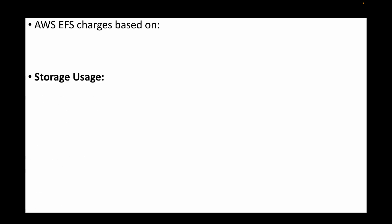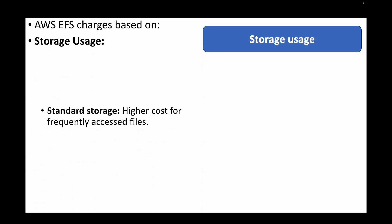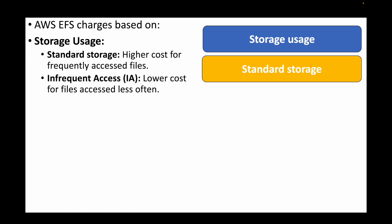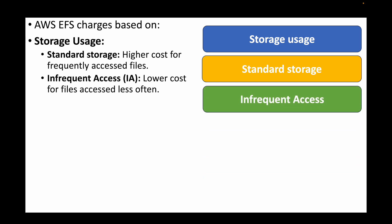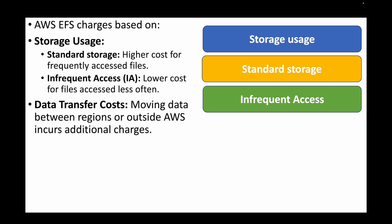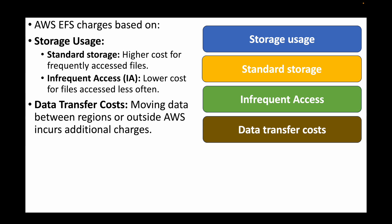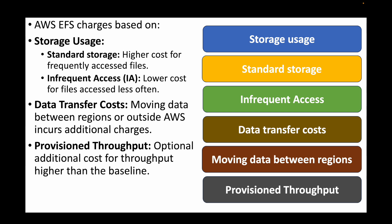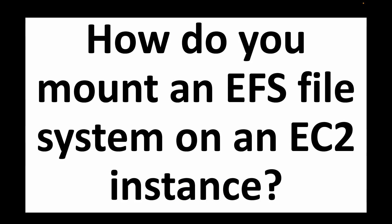The next question is: explain the cost model of AWS EFS. EFS charges are based on storage usage. Standard storage has higher cost for frequently accessed files, while Infrequently Accessed storage has lower cost for files accessed less often. You'll also be charged for data transfer costs if moving data between regions or outside AWS. Finally, if you're using Provisioned Throughput, you'll pay for that as well.